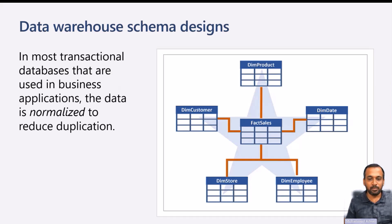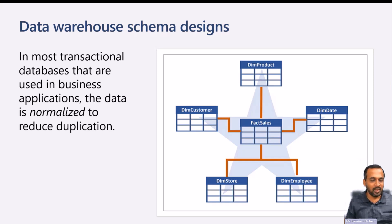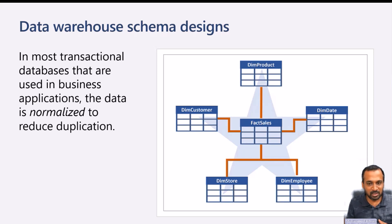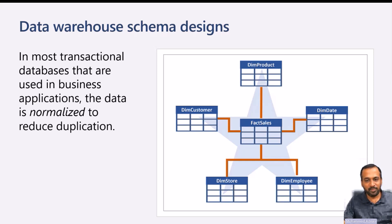Such as product code, customer ID, or transaction number. Usually in the data warehouse we have data dimensions and fact tables — like fact sales, dim product, dim customer, dim date, dim store and employee. While in most transactional data versions used in business applications, data is normalized to reduce duplication. We need to try to build data into a star schema approach because that performs faster for analytics purposes like in Power BI. In real projects it may or may not happen — it depends on the project.